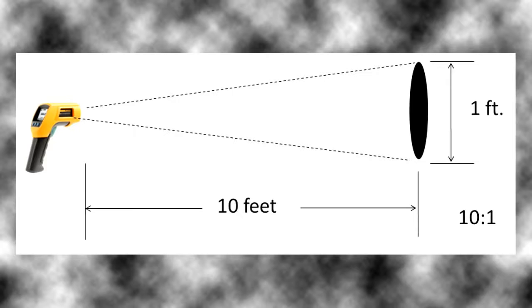Distance to spot ratio is used to express the ability of an infrared thermometer to measure temperature of a surface from a distance. The D to S ratio is the ratio of the distance from the IR tool that you're using to the surface that you're measuring.